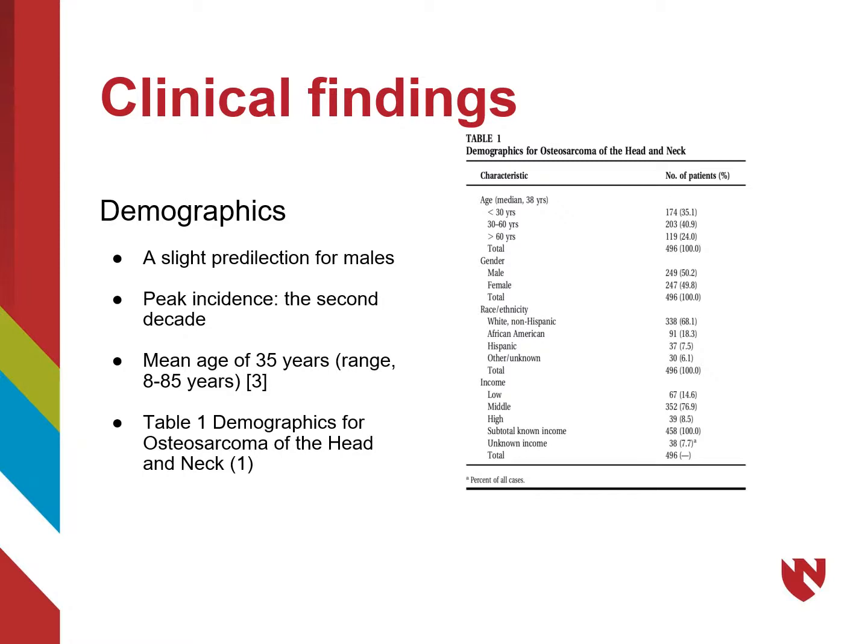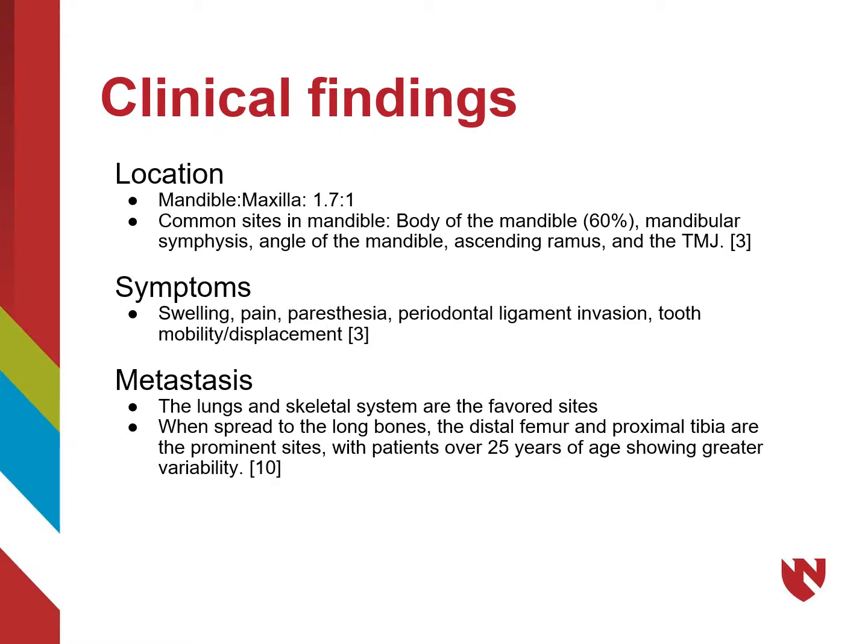Table 1 shows demographics for osteosarcoma specifically for the head and neck area. Osteosarcoma is most often found in the mandible, occurring about twice as often as in the maxilla. Common sites in the mandible include the body at 60 percent, as well as the symphysis, mandibular angle, ascending ramus, and the TMJ.